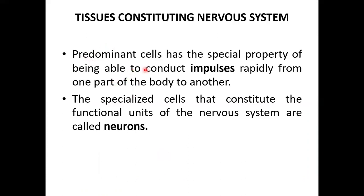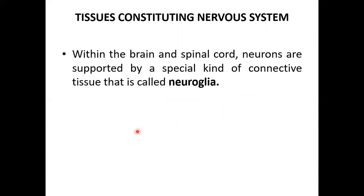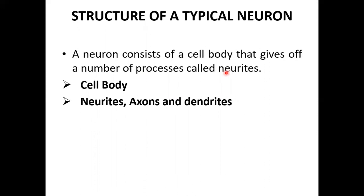A neuron is a specialized cell that constitutes the functional unit of the nervous system. Neurons are excitable and carry impulses rapidly from one part of the body to another. The supporting tissue in the nervous system is the neuroglia.